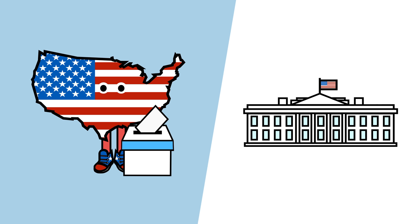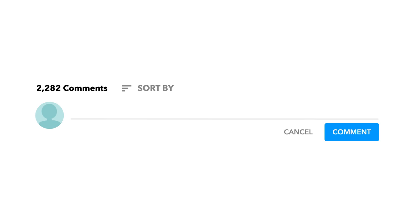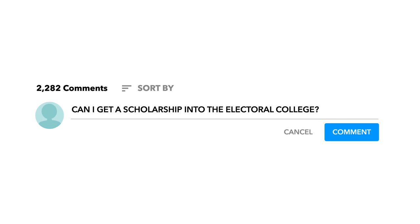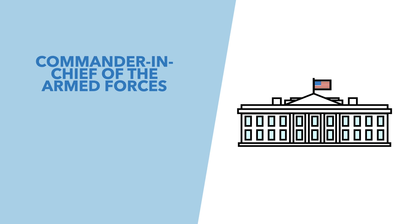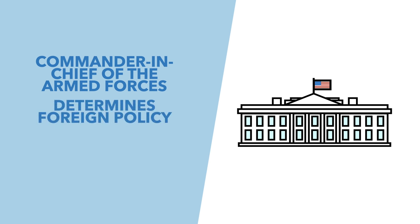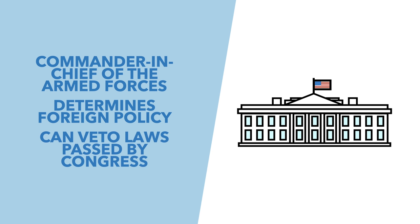We won't go into that now, but if you'd like to see a video on how the electoral college works, particularly with this election year heating up, let us know by liking this video and commenting down below. Anyway, the president serves as the commander-in-chief of the armed forces, determines the country's foreign policy, and has authority to veto laws passed by Congress.